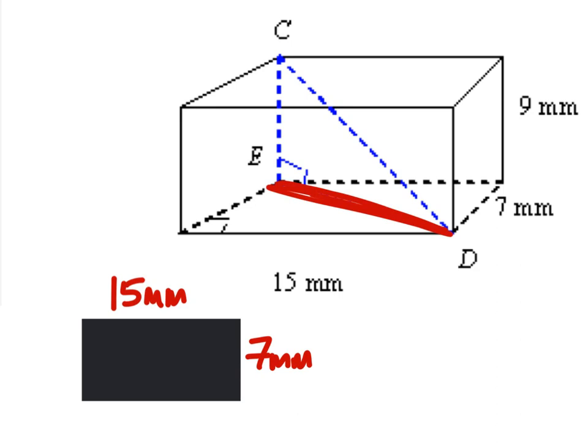So, what I have drawn here is the base of this rectangular prism, and what we want is the diagonal, which is the line that is drawn in that three-dimensional shape.